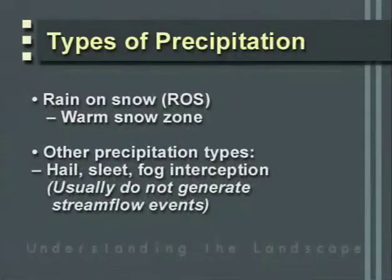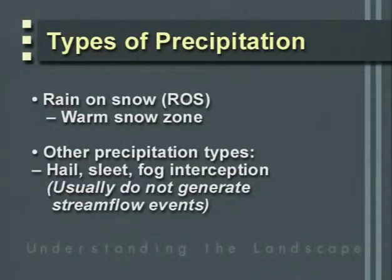Other types of precipitation include hail, sleet, and fog interception, which is considered important in certain coastal environments. These may result in a contribution to the land but may not result in streamflow generation.